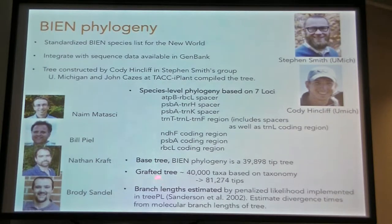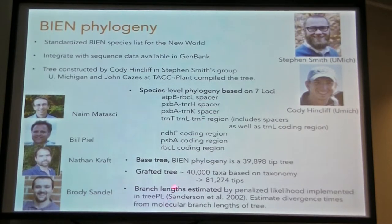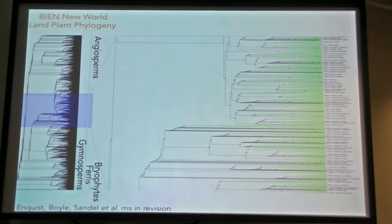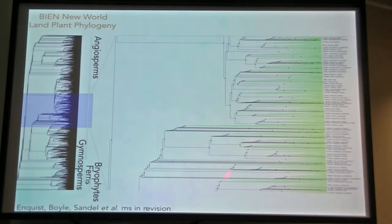With the BN species list we had to do some grafting, and we also did various different estimates of branch lengths. The tree is not perfect, but it is what it is. This is all angiosperms, gymnosperms, and bryophytes. We're using a viewer here with iPlant where you can zoom in and check out the location of different taxa.